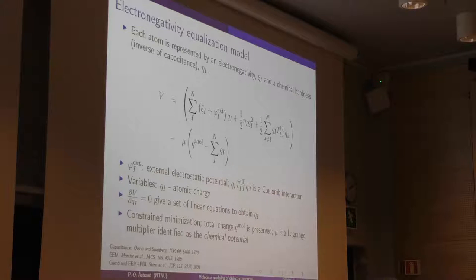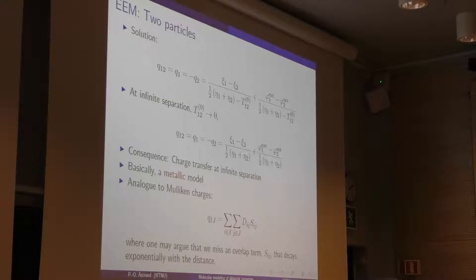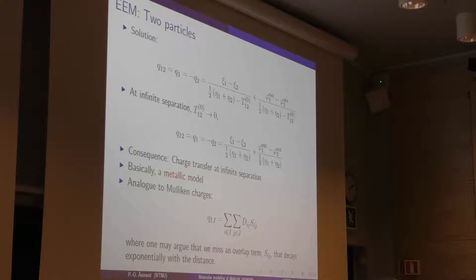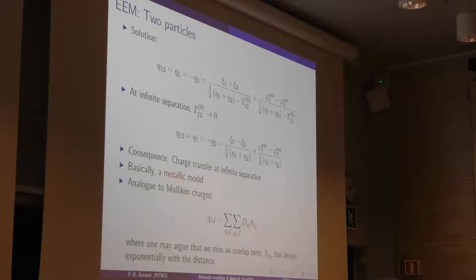That is the kind of models we try to parameterize. It's instructive to solve the two-particle system — we see that a difference in electronegativity and difference in applied potential gives the charge transfer between two atoms. Also here we have divergences when positive terms cancel each other and become zero, and you again get a divergence where you have an excitation.